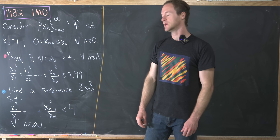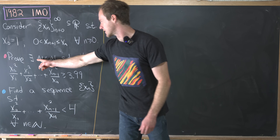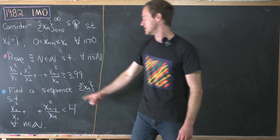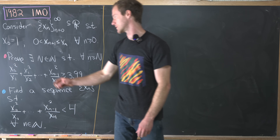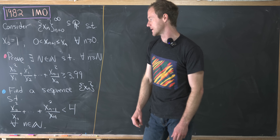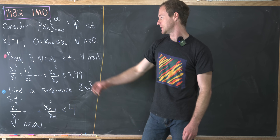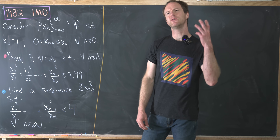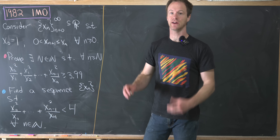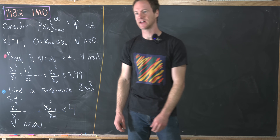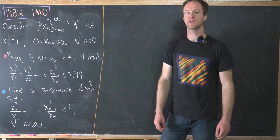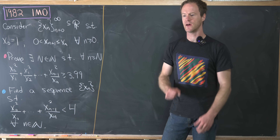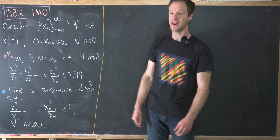We've got two things to prove. For the first one, we want to prove that there exists a natural number N such that if little n is bigger than or equal to big N, the sum x₀²/x₁ + x₁²/x₂ + ... + xₙ₋₁²/xₙ is bigger than or equal to 3.999. Looking at this, you might think through the catalog of standard inequality results, and the left-hand side nearly looks like the Cauchy-Schwarz inequality.